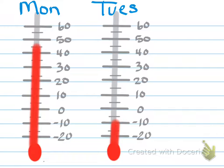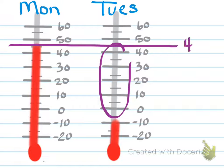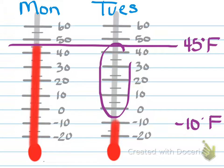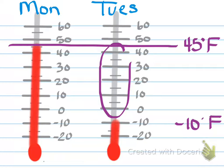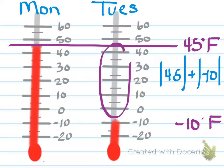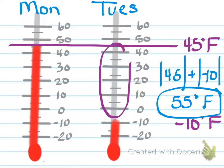So if you're figuring out this space — we've got 45 degrees Fahrenheit here and negative 10 degrees Fahrenheit here — we're looking for the distance in the middle. To find that, I need to find what it is to zero, and then what it is from zero to negative 10. You take the absolute value of 45 and add it to the absolute value of negative 10, and we get 55 degrees Fahrenheit as the difference in temperature from Monday to Tuesday.